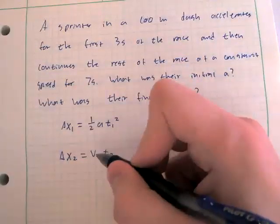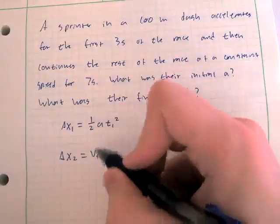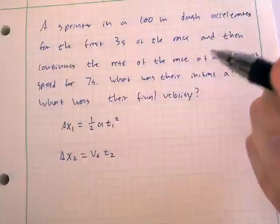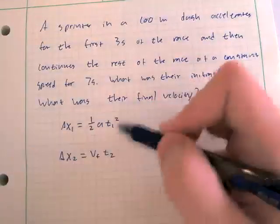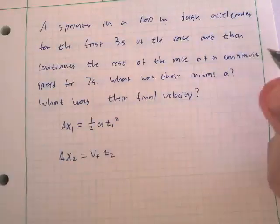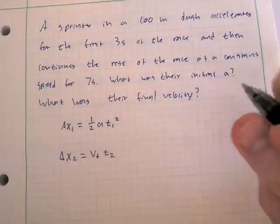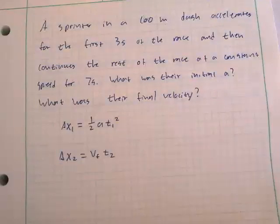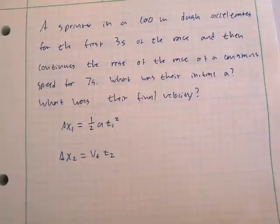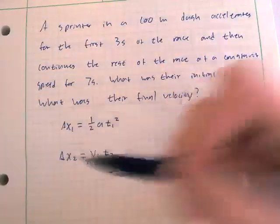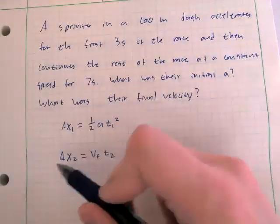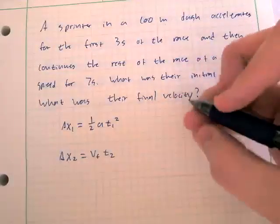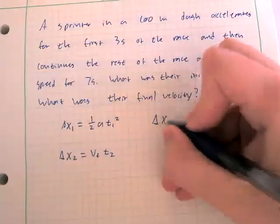Now we have two equations but four unknowns: delta x1, delta x2, v_final, and a. We know t1, t2, and the total length. We need more information. One key constraint comes not from a kinematics equation but from understanding the physical situation: delta x1 plus delta x2 must equal 100 meters, since this is a 100-meter dash and all parts of the trip must add up to the full distance.